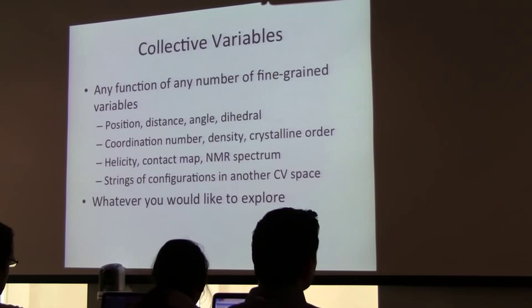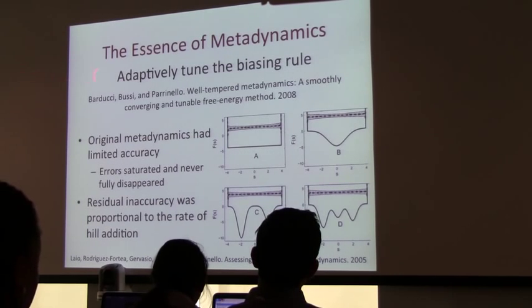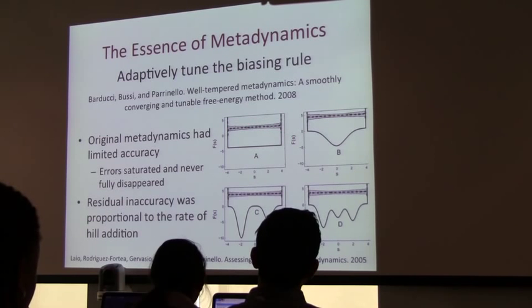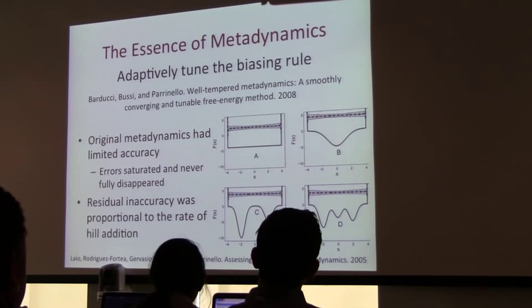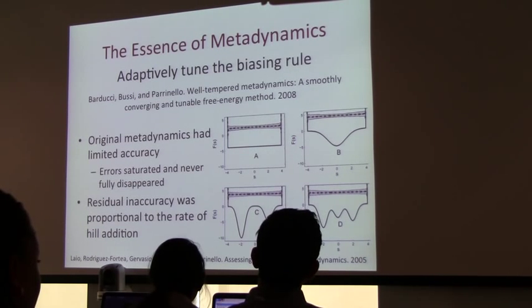With that, they were able to explore quite a bit of physics and see many rare events of interest. However, the method had limited accuracy — the accuracy was seen to be model independent. In tests with four different models all sampled with metadynamics, the final error was the same regardless of model. The error never went away. They did notice that the residual inaccuracy was proportional to the rate of adding hills and inversely proportional to the hill width — the more narrow the hill, the more this error would show up.